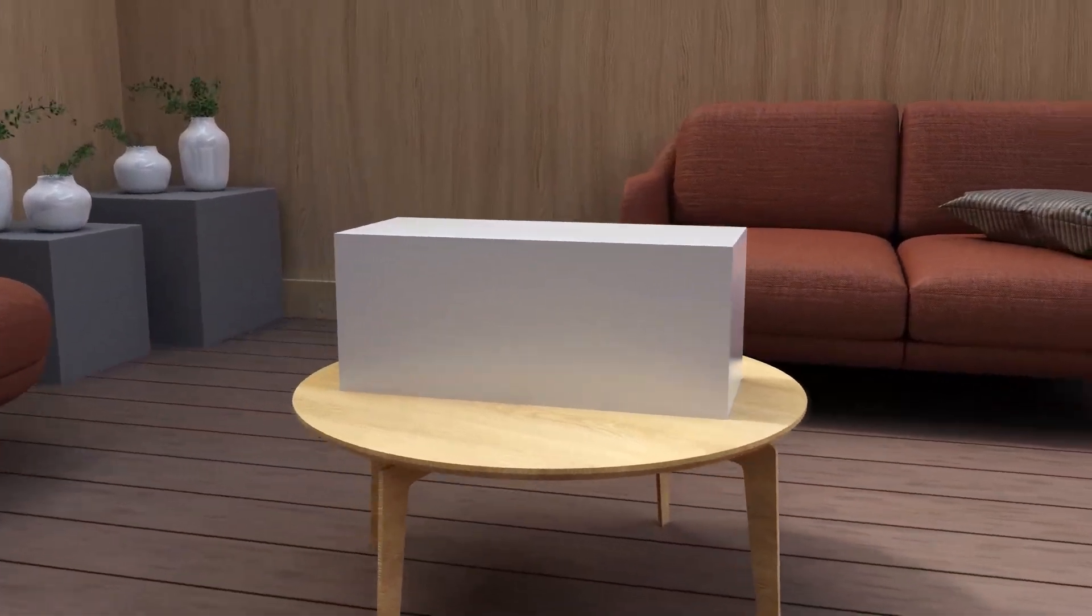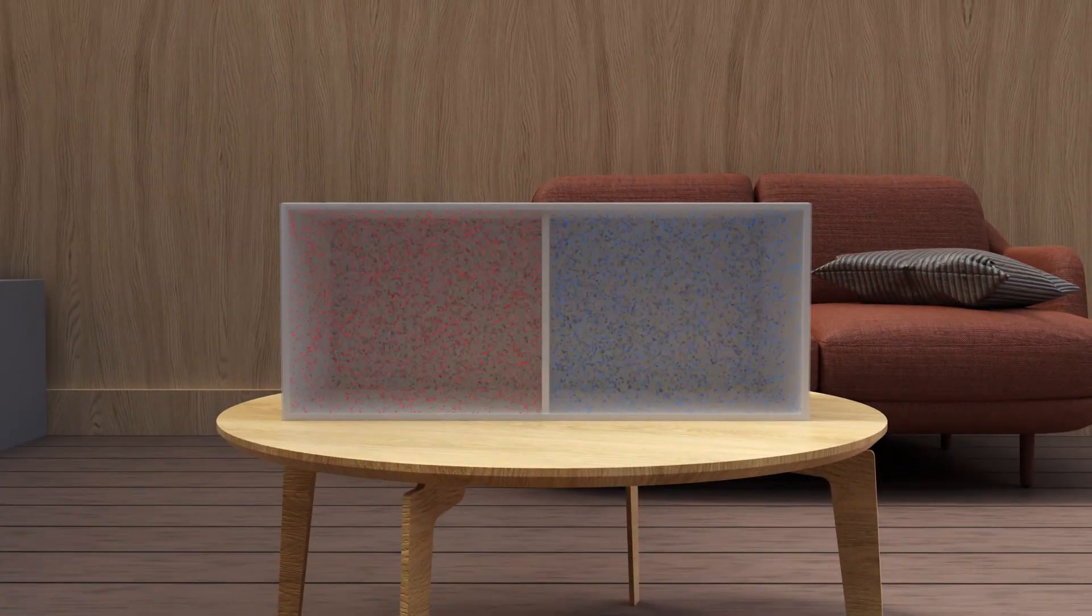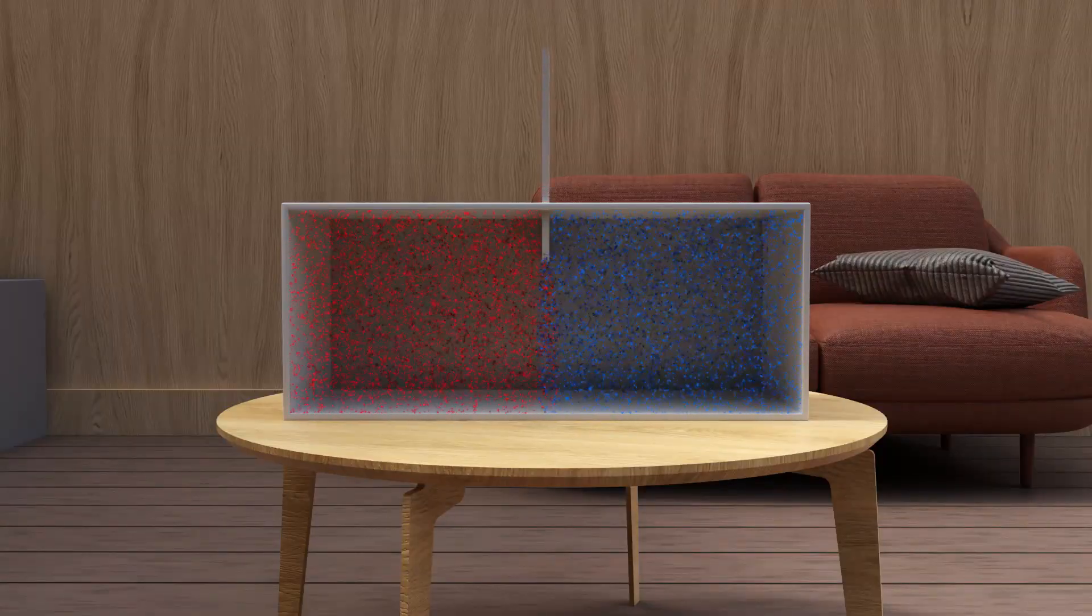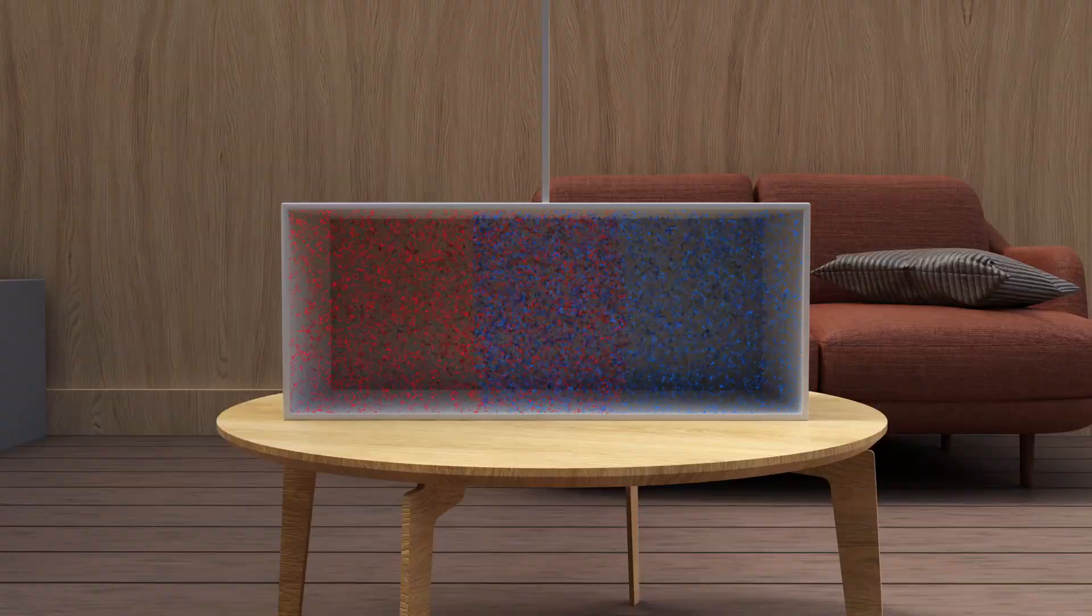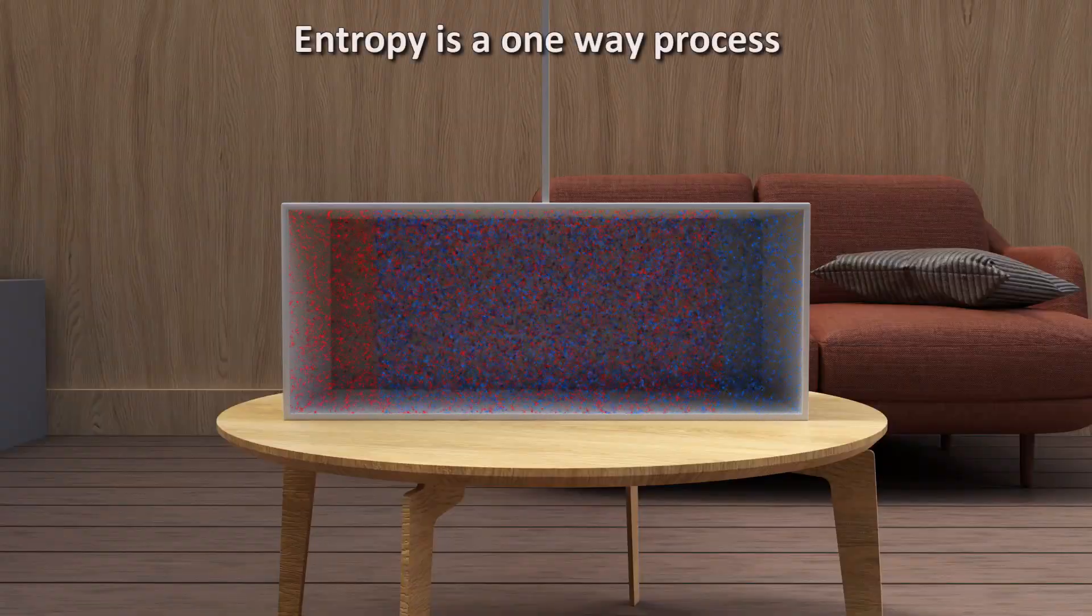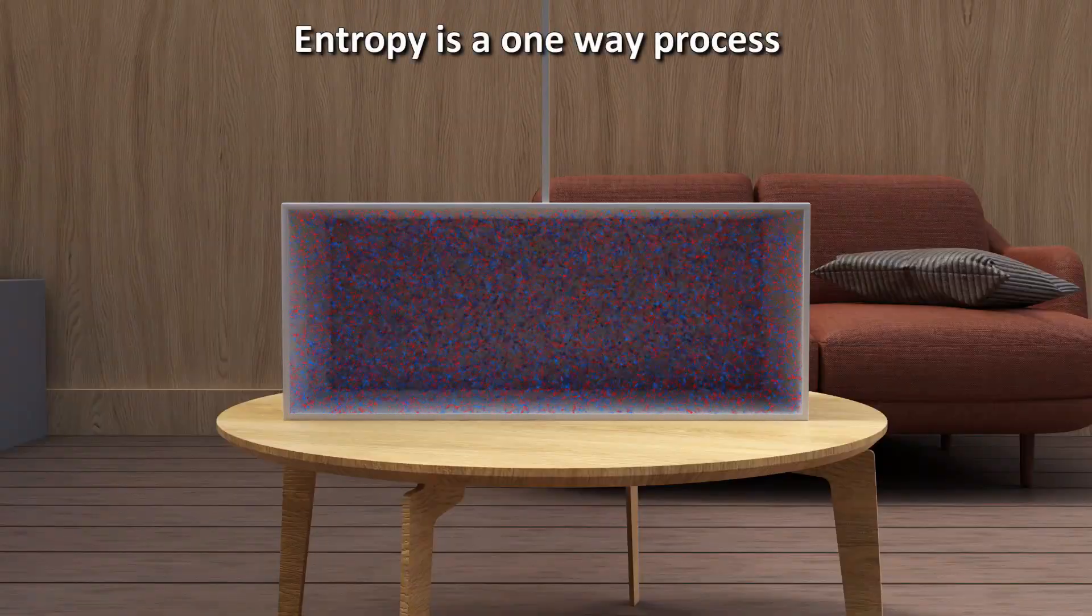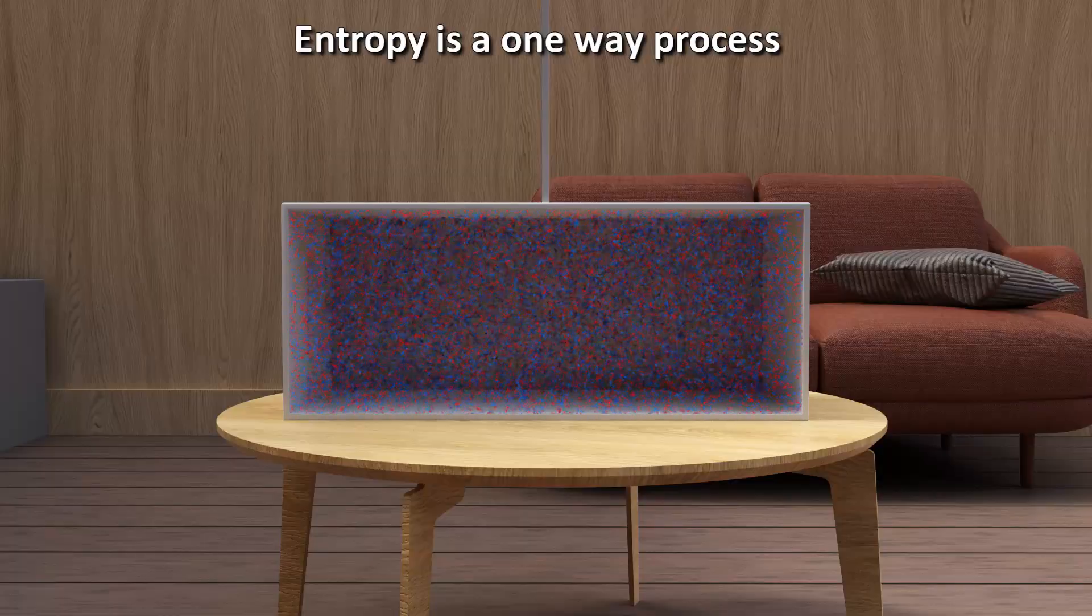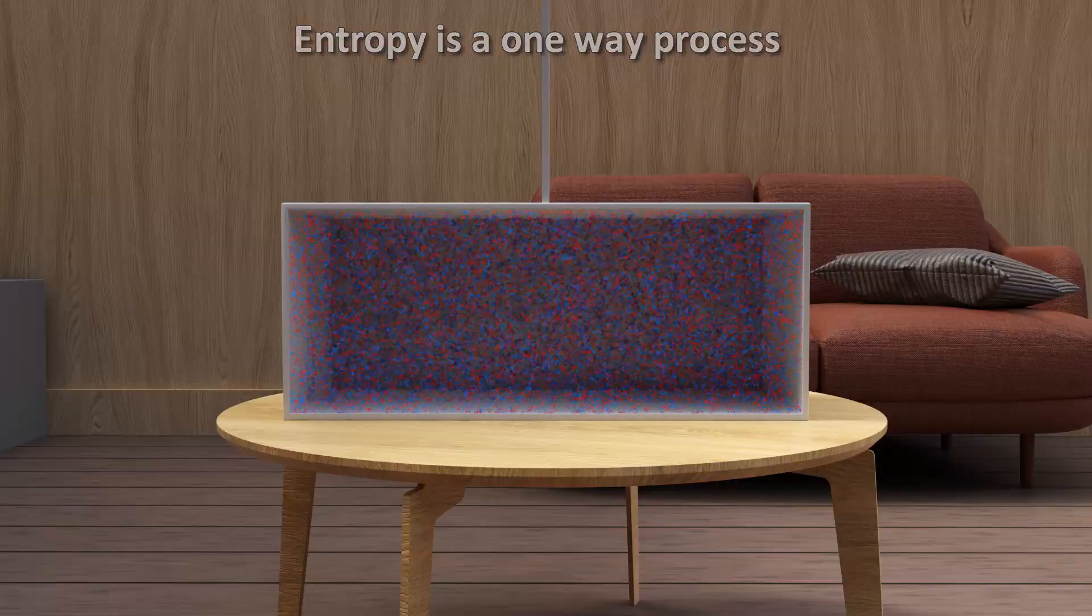How you might ask? Imagine again that we have two gases on the two sides of a chamber. Now we open the middle of the chamber to allow the gases to mix. They will mix together to make a kind of purple gas. This process only goes one way, from an ordered state of two separate red and blue gases, to a disordered state of a purple gas, a mixture of both gases.